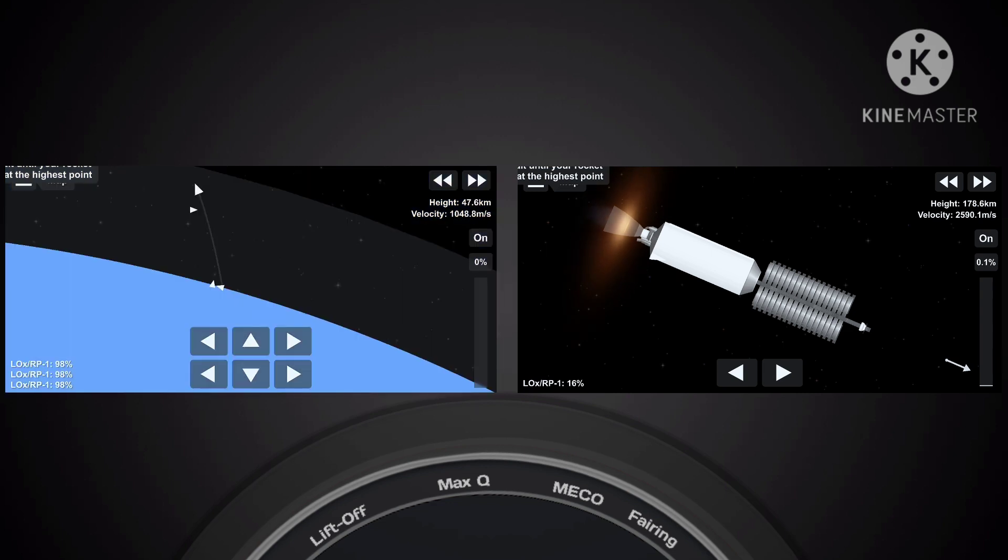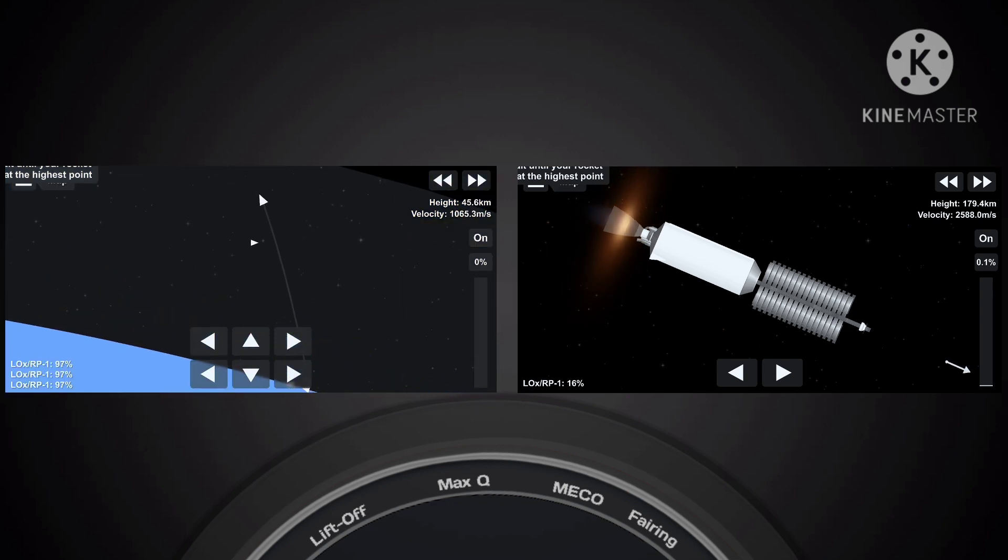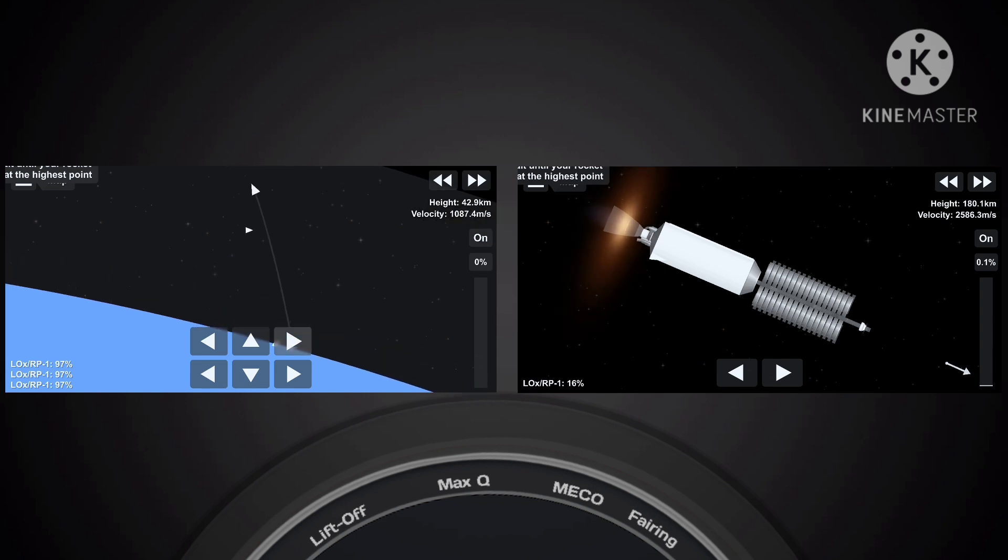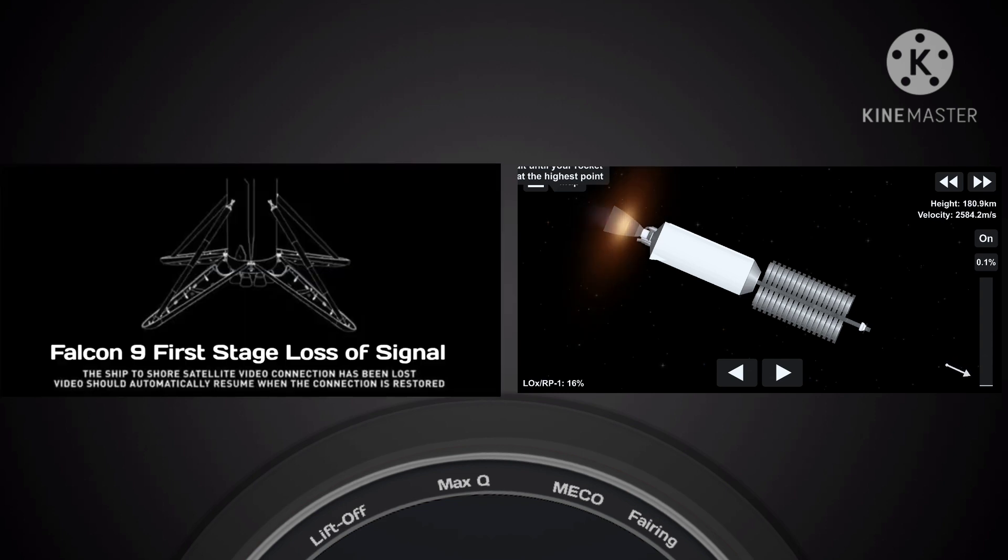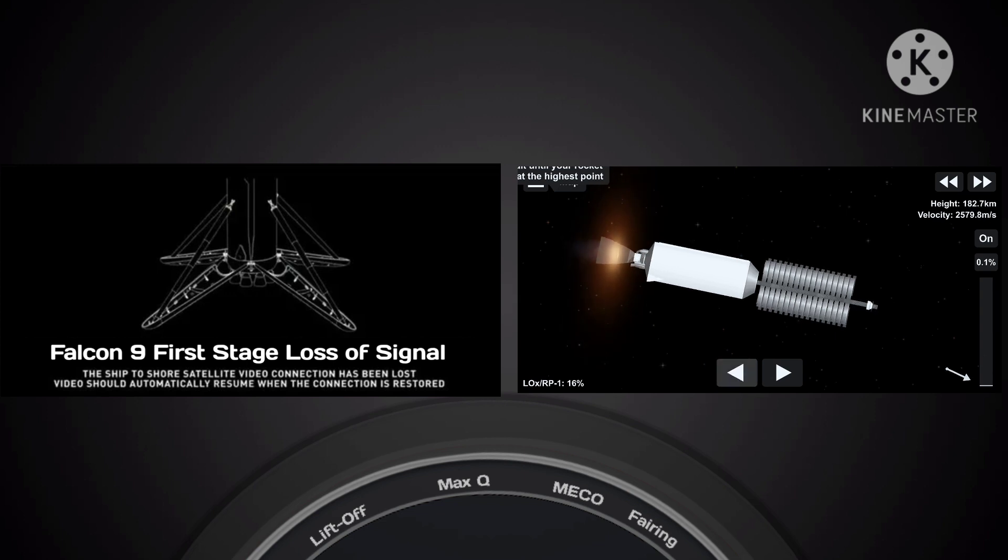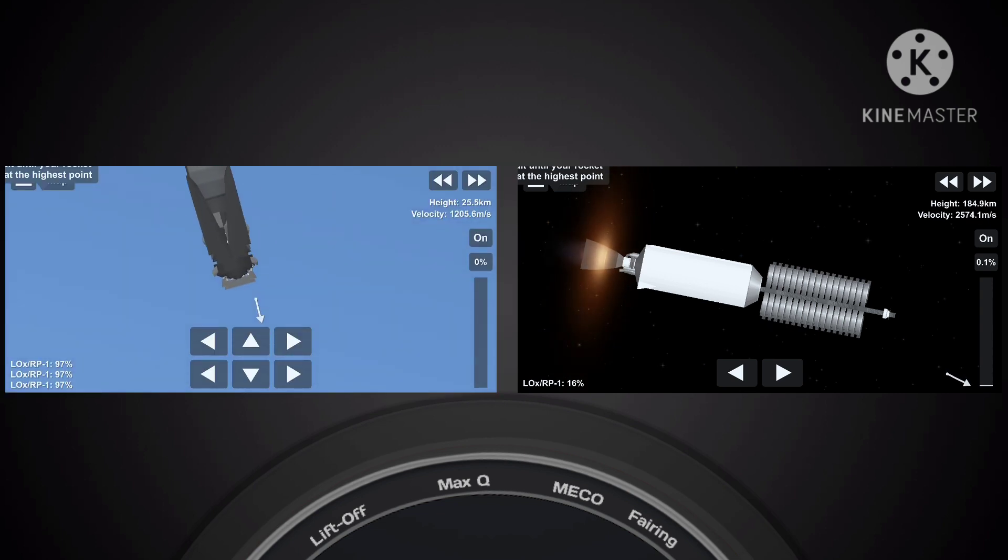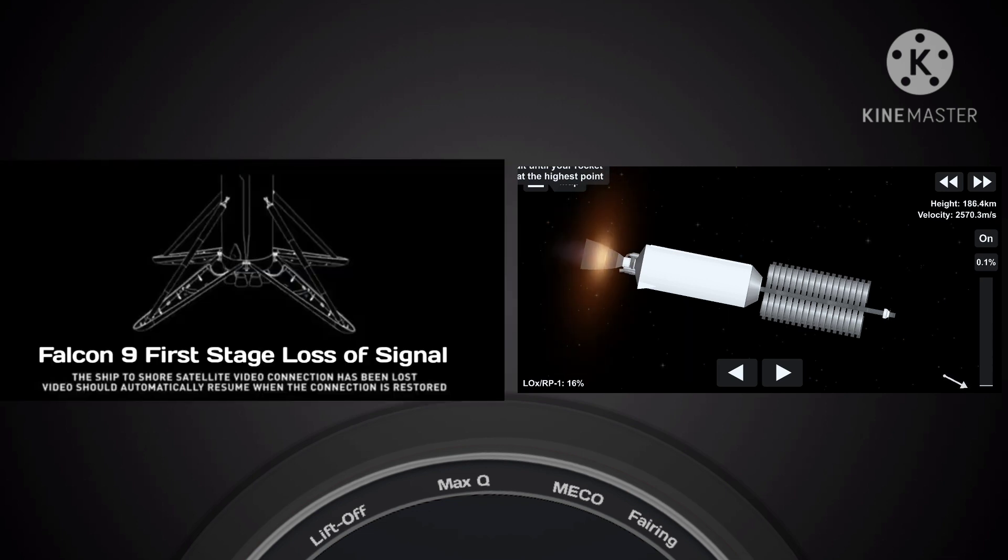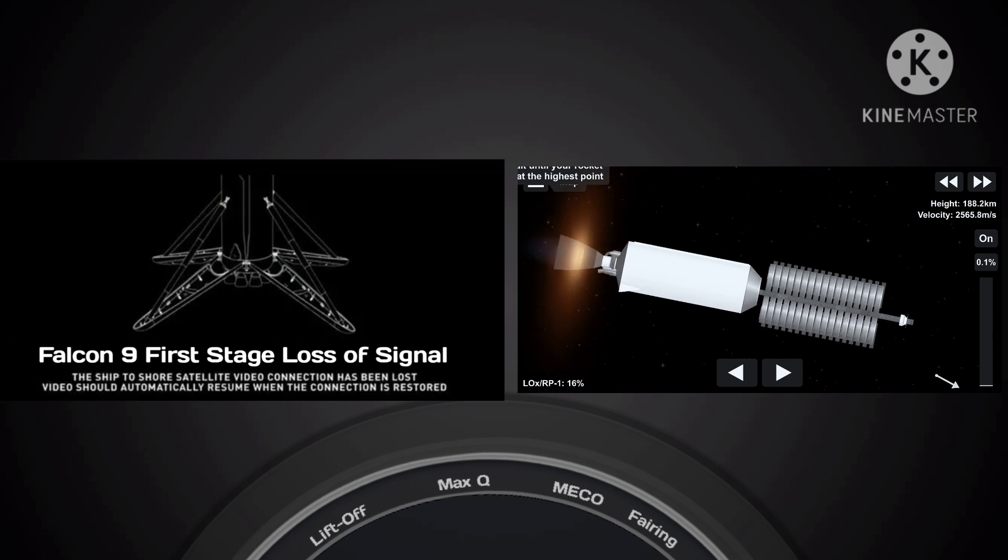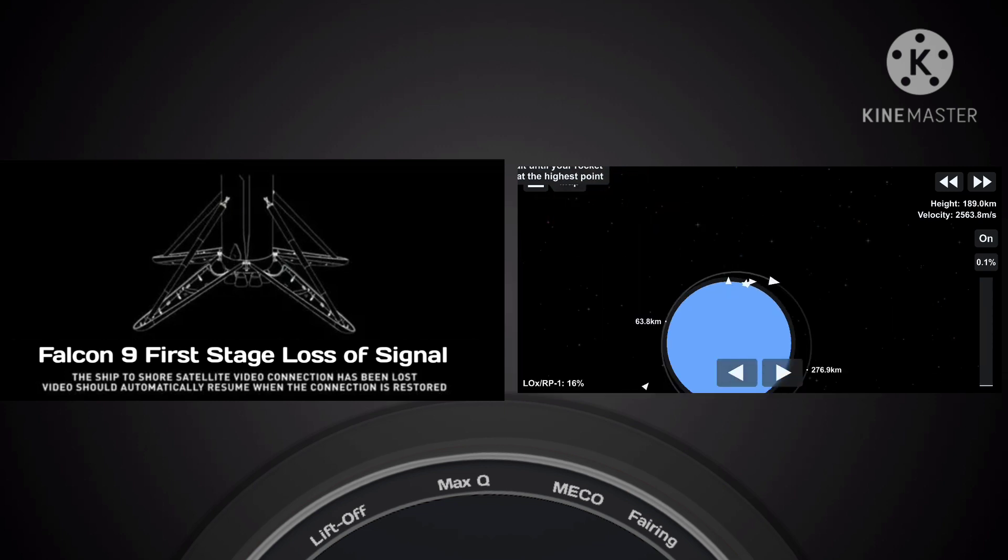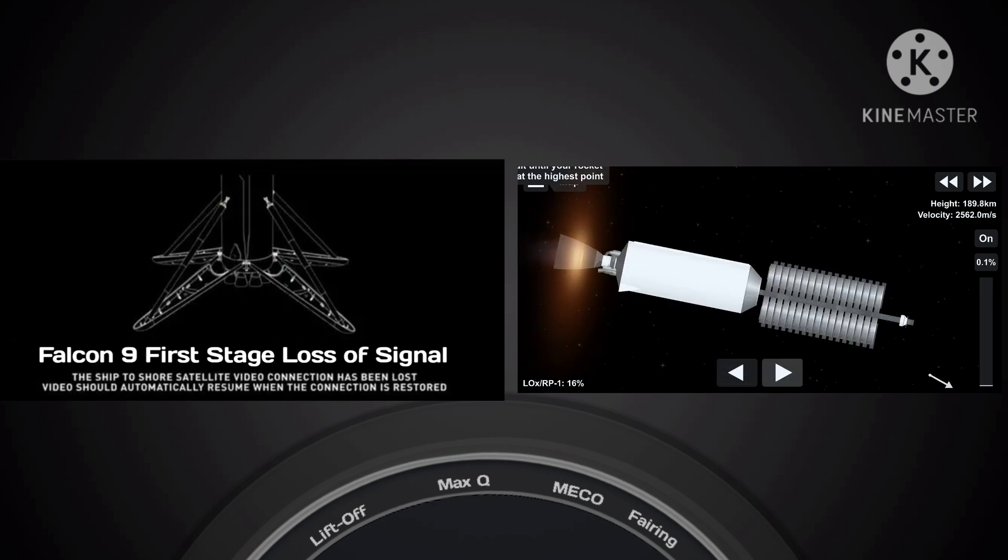Next up in about a minute will be the landing burn for the first stage. As I mentioned earlier, it will just be the center engine for the landing burn. The M1D engines have 845 kilonewtons or 190,000 pounds of thrust. That's enough to slow this very large vehicle down to touch down on that drone ship you see right there in front of you, Just Read the Instructions. This will be the third landing for this specific booster.